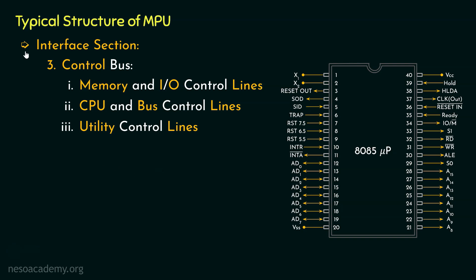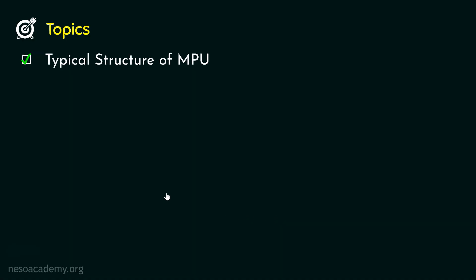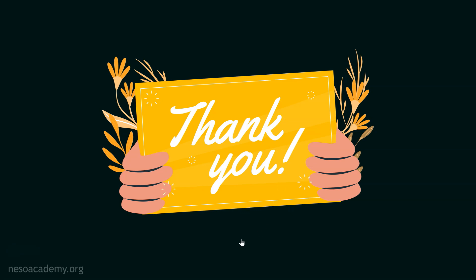Now I believe, from the typical structure of the microprocessing unit, you can identify all the different things in the 8085 microprocessor. In this session we learnt about the typical structure of the MPU, that is the microprocessing unit, and we also tried to relate all the different pins that we have learnt so far with this typical structure. That will be all for this session. I'll see you in the next session. Thank you for watching.